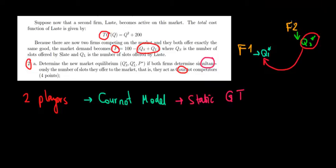The same logic applies to firm two — the second player in the market maximizes its quantity taking into account the fact that firm one also puts some quantity on the market, so it takes into account Q1 as well. Now how does this look? We have the price function and we need the total cost function for the second company and for the first company.